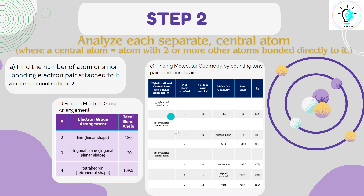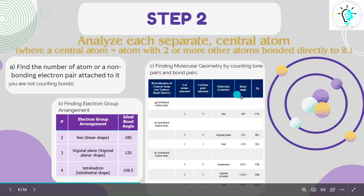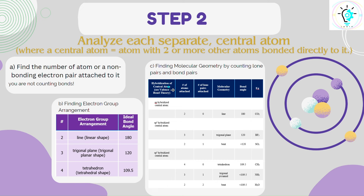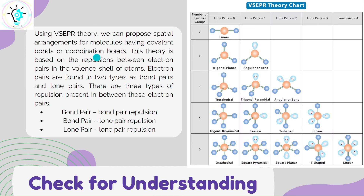This is the basic idea of how we determine the molecular geometry of a given molecule. Hybridization — which we will discuss later with valence bond theory — plays a role in determining all of this. Using VSEPR theory, we give the spatial arrangement for molecules having a covalent bond or coordination bond. It is based on three types of repulsions: bond pair–bond pair repulsion, bond pair–lone pair repulsion, and lone pair–lone pair repulsion.